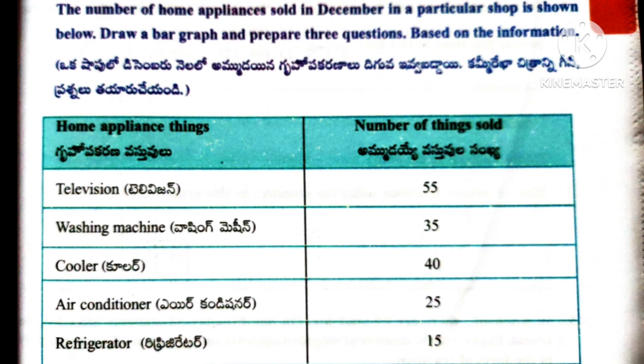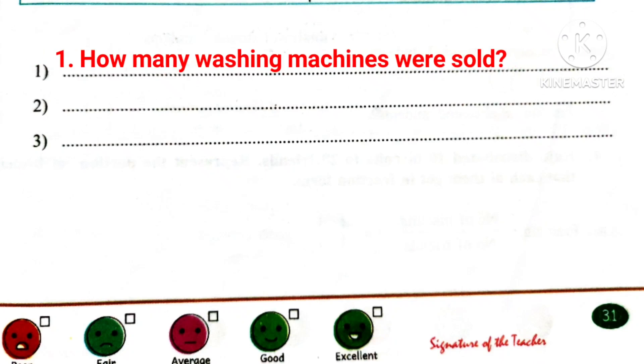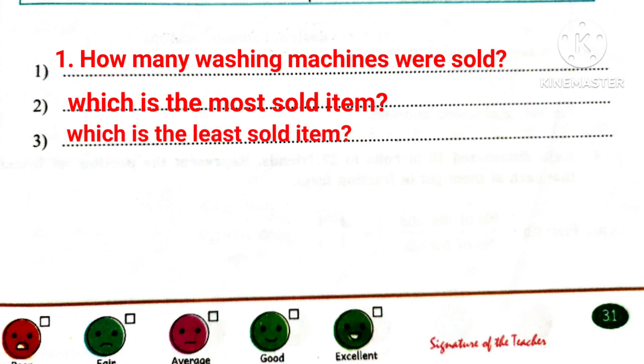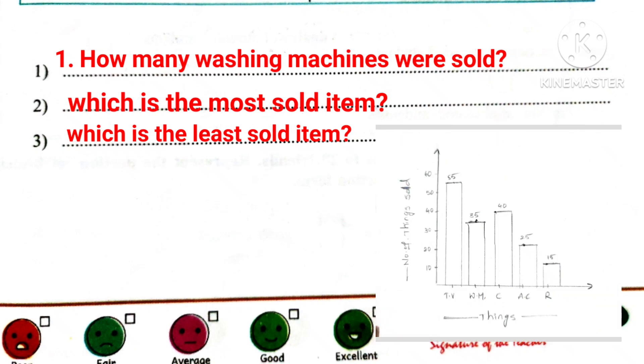Question number 3: The number of home appliances sold in December in a particular shop is shown below. Draw a bar graph and prepare 3 questions based on the information. The data: Television — 55; Washing machine — 35; Cooler — 40; Air conditioner — 25; Refrigerator — 15. Now prepare a bar graph. Three sample questions: 1) How many washing machines were sold? 2) Which is the most sold item? 3) Which is the least sold item? Here is the bar graph with items on the x-axis and number of items on the y-axis.